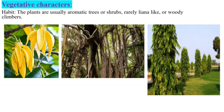Next, vegetative characters. Habit: the plants are usually aromatic, like in Artabotrys hexapetalus, or shrubs, and rarely lianas or woody climbers. You can see this in the picture. The first picture is Artabotrys odoratissimus, and the next is the liana, and Polyalthia longifolia, which you can commonly see on roadsides.